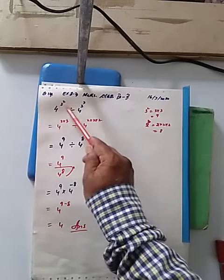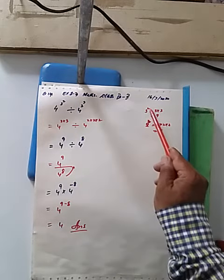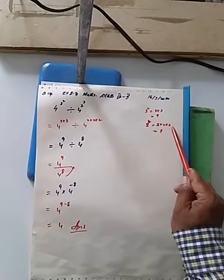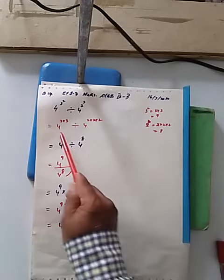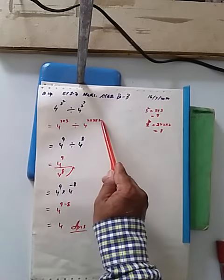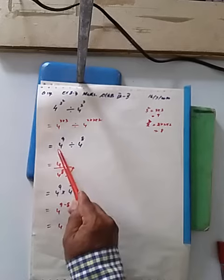9. And 2 cube is 2 into 2 into 2, which equals 8. So we can write 4 raised to the power 3 into 3, divided by 4 raised to the power 2 into 2 into 2, which is 4 raised to